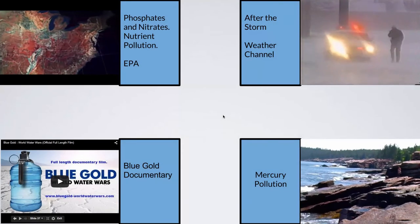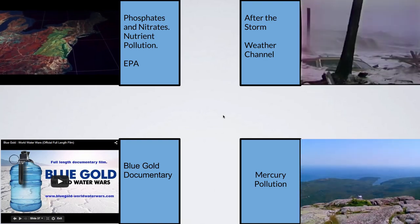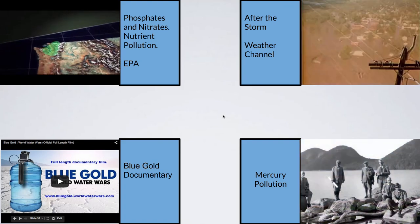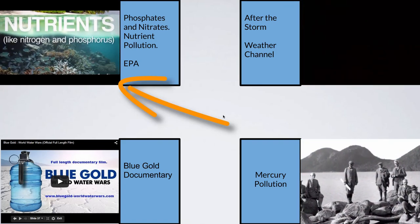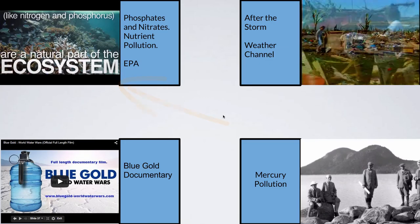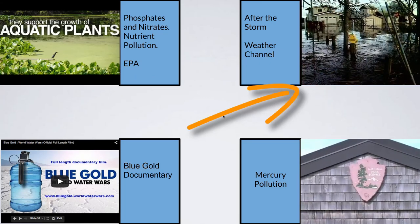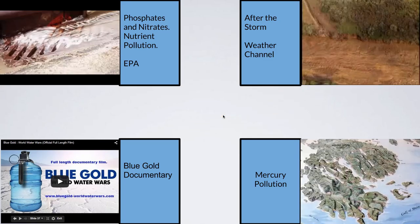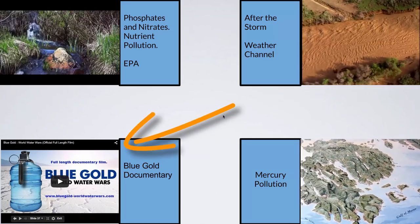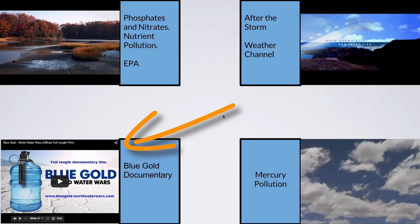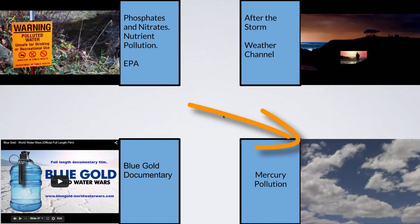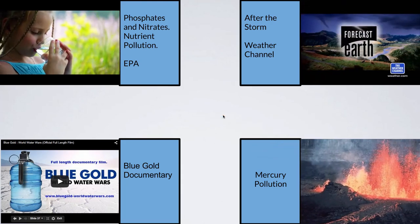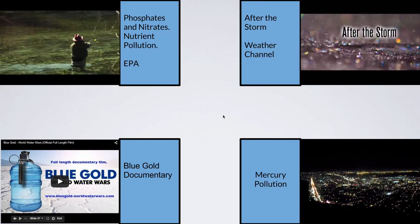All right, guys, we did it — we got through water management. Hooray! I've got four videos for you, although two of them we should be watching in class. The one on the top left — phosphates and nitrates, nutrient pollution by the EPA — we may not get to in class. The one on the top right, called After the Storm by the Weather Channel, we should be able to do in class. The bottom left is Blue Gold, a documentary we'll be watching in class. And on the bottom right, I highly recommend you watch the video on mercury pollution. Thank you so much — don't forget to subscribe and take care.